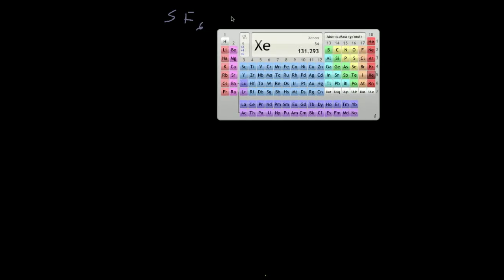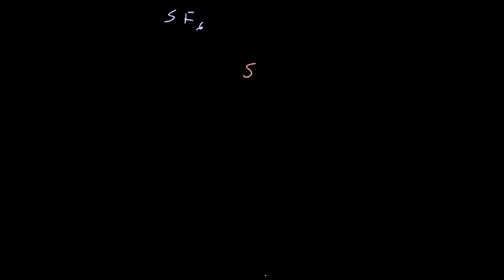SF₆ is sulfur and fluorine. You can probably guess because it has fluorine that the sulfur is going to be the more metallic one and in turn be the central atom. You can look at the periodic table — it is further to the left and down than fluorine, so it is more metallic. So you're going to write sulfur in the center, and you're going to have six fluorines around it.